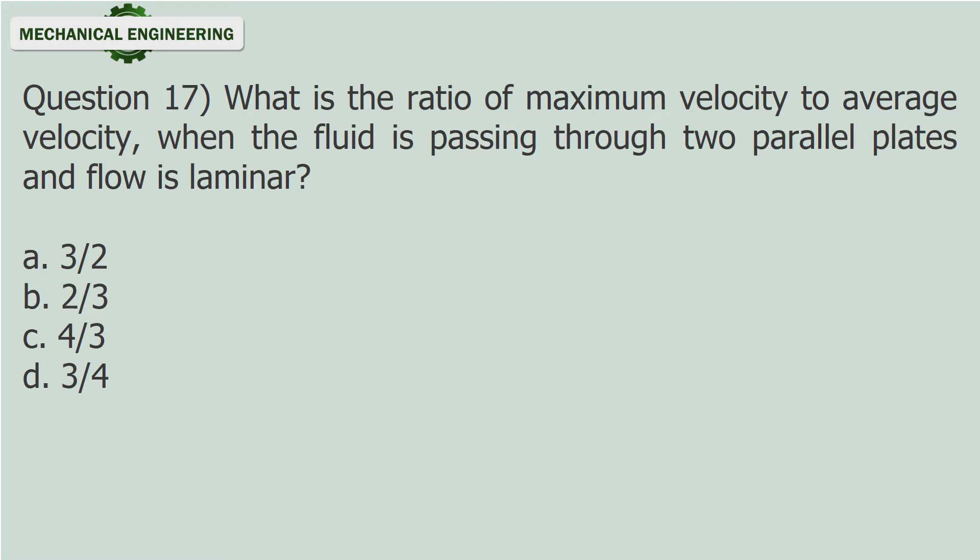Question 17. What is the ratio of maximum velocity to average velocity when the fluid is passing through the pipe? A. Three-halves, B. Two-thirds, C. Four-thirds, D. Three-fourths.